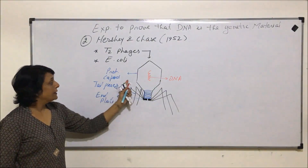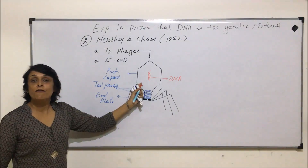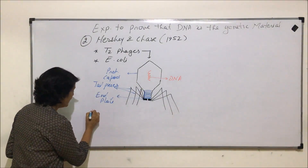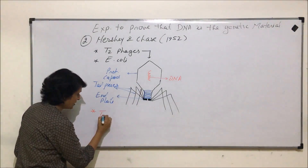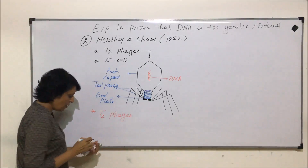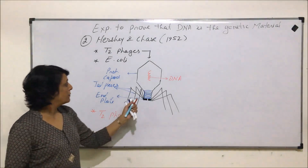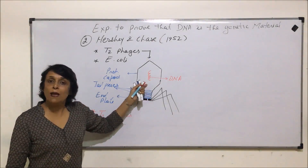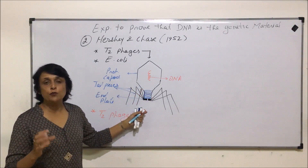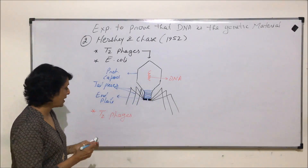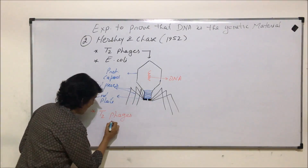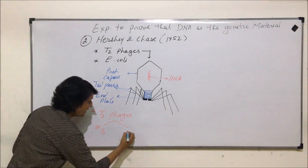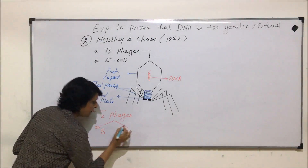What did they do? They grew or developed these phages with E. coli in two types of mediums. They cultured T2 phages, and we know bacteriophages can multiply only in the host. The medium given for their culturing or multiplication was one having radioactive sulfur, that is S35, and radioactive phosphorus, that is P32.